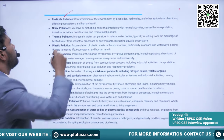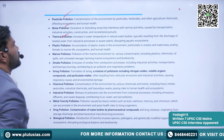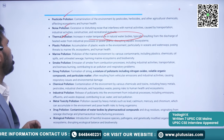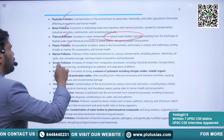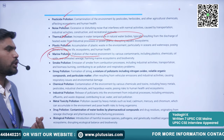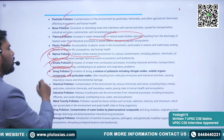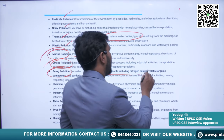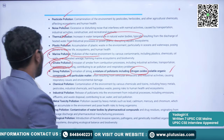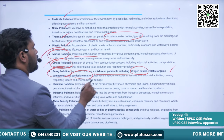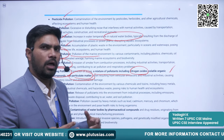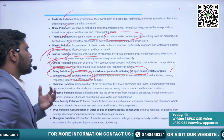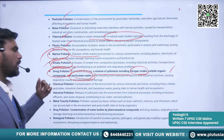Other types include noise pollution; thermal pollution, which is the increase in water temperature in natural water bodies; plastic pollution; marine pollution; and smog pollution. Smog is a mixture of pollutants including nitrous oxides, nitrogen oxides, volatile organic compounds, and particulate matter that form a mixture known as smog.